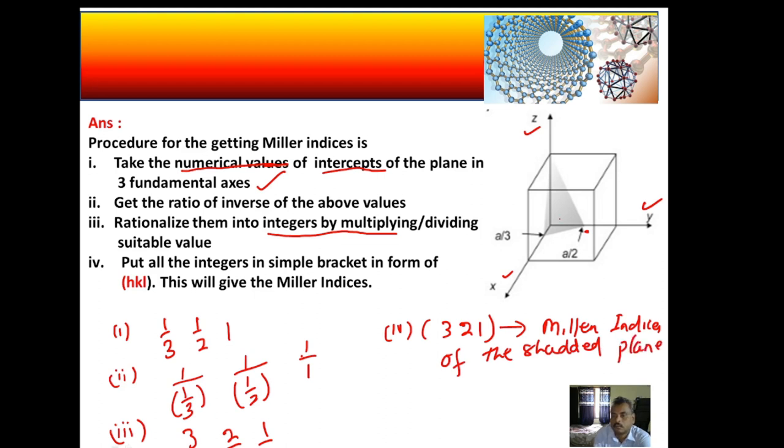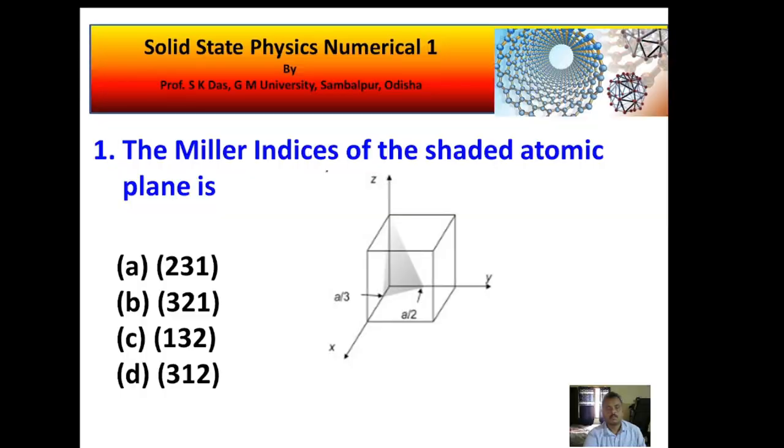This is the general procedure. By applying this procedure, you can find out the Miller indices of any of the crystal planes. So the answer in this case obviously will be option B.